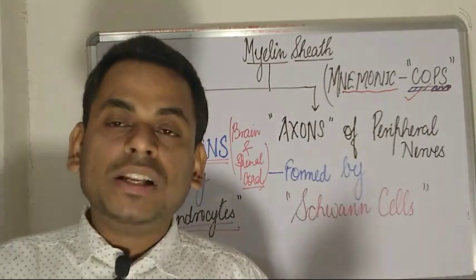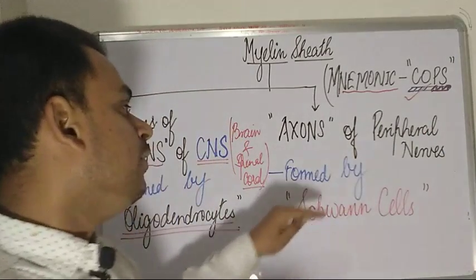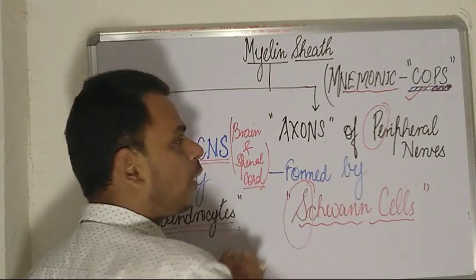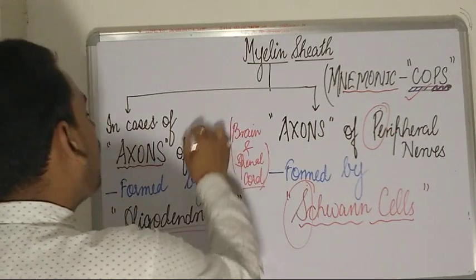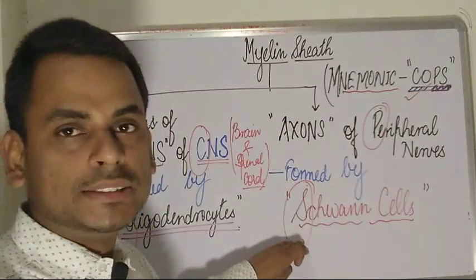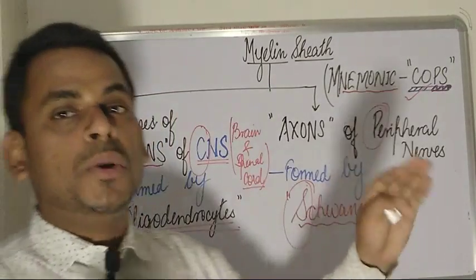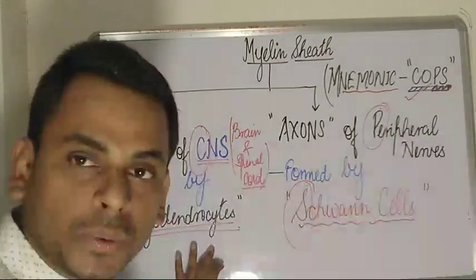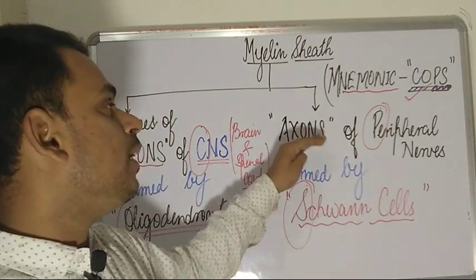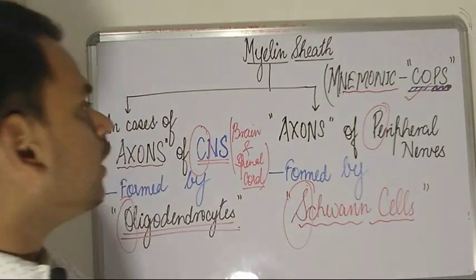Moving on to peripheral nerves: the myelin sheath covering myelinated peripheral nerves is formed by Schwann cells. In the mnemonic COPS, the P stands for Peripheral nerves and the S stands for Schwann cells. So 'PS' covers the second half. Together, COPS gives us: C for Central, O for Oligodendrocytes, P for Peripheral, S for Schwann cells — making it easy to remember myelin sheath derivation.